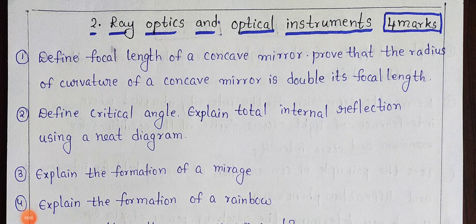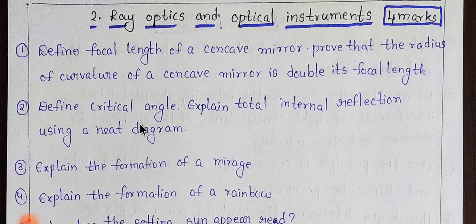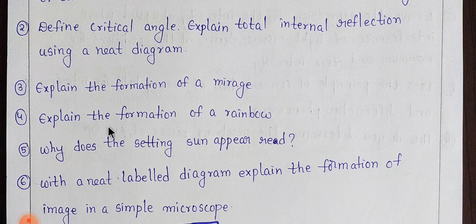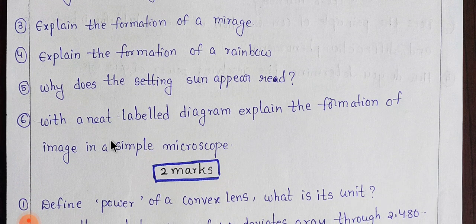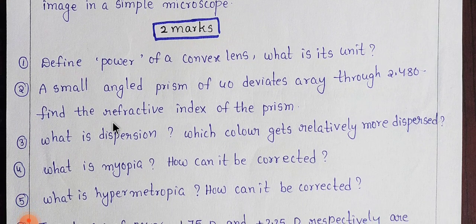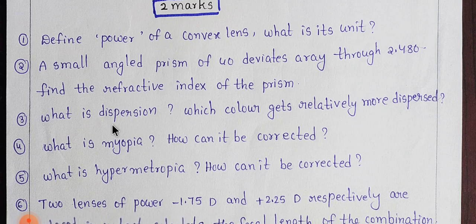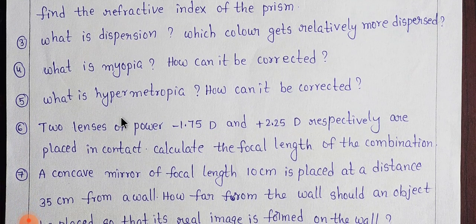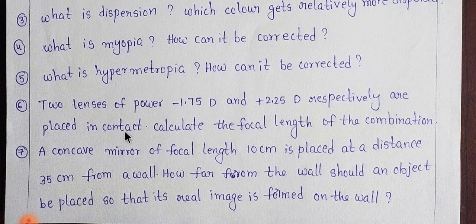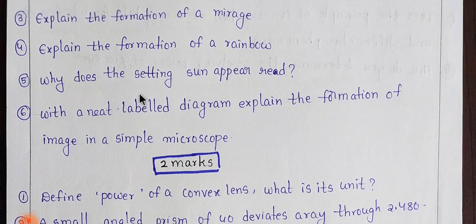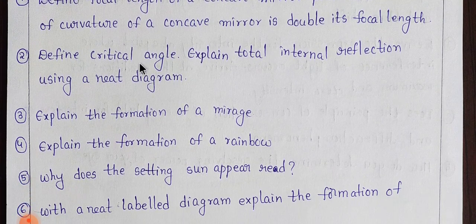Students, here in the second lesson — ray optics and optical instruments — there are 4 marks of weightage. If you have 4 marks, you can see how it works. There are also 2 marks of weightage. There are 4 marks in this page total. Let's go to the next lesson.